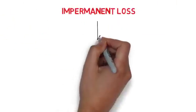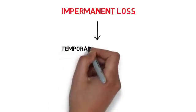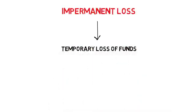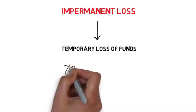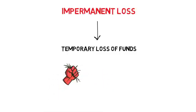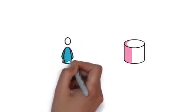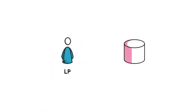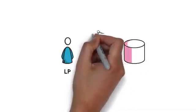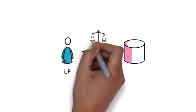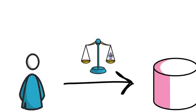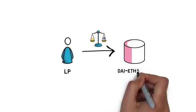In essence, impermanent loss is a temporary loss of funds occurring when providing liquidity. It's very often explained as a difference between holding an asset versus providing liquidity in that asset. Impermanent loss is usually observed in standard liquidity pools where the liquidity provider has to provide both assets in a correct ratio and one of the assets is volatile in relation to the other — for example, in a Uniswap DAI/ETH 50-50 liquidity pool.